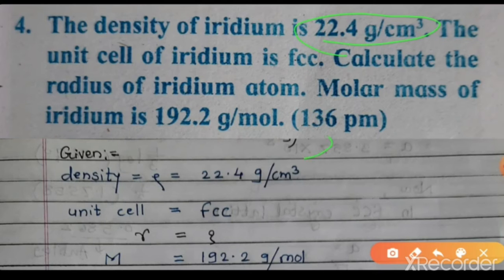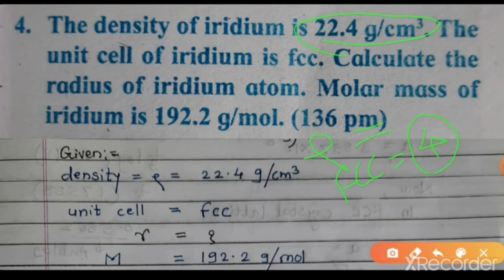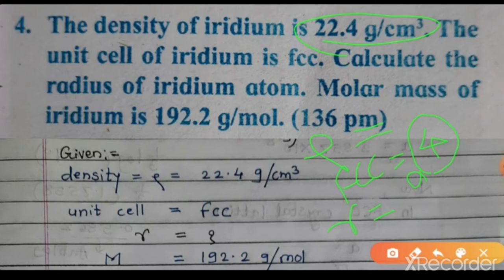Density ρ is given, and the unit cell is FCC (face-centered cubic crystal). An FCC crystal contains 4 atoms, so n = 4. We need to calculate the radius r. For FCC, the radius formula is r = a / (2√2). But first, we must use the density formula: ρ = nM / (a³ × Nₐ).